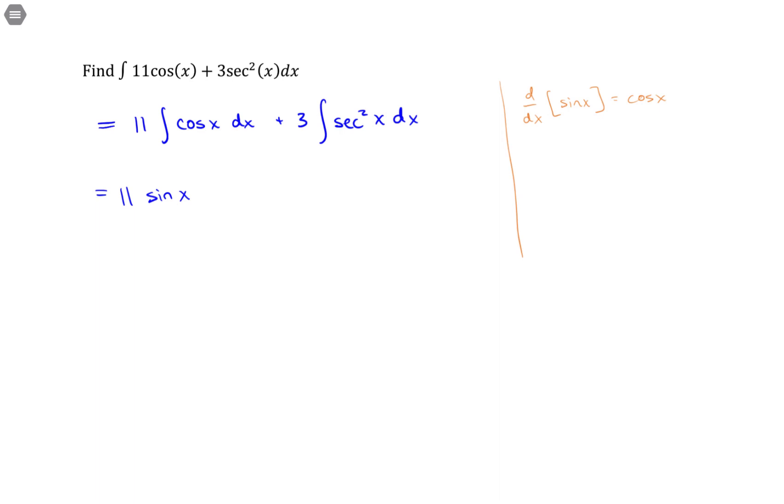Now, the derivative of cosine, if you'll recall, is a negative value. Here, the antiderivative of cosine is not negative. So, the other term.